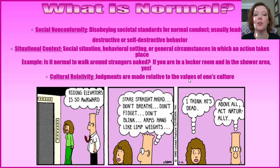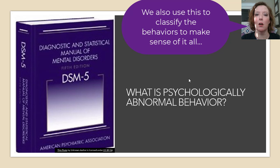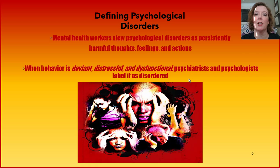And then cultural relativity — judgments are made relative to the values of one's culture. What's appropriate and acceptable in one culture may not be in another, so you have to take that into account. So what is psychologically abnormal behavior? The American Psychological Association publishes what we call the DSM — the Diagnostic and Statistical Manual of Mental Disorders. This is how we deem behavior to be abnormal. Mental health workers view psychological disorders as persistently harmful thoughts, feelings, or actions. When behavior is deviant, distressful, and dysfunctional, psychiatrists and psychologists typically label it as disordered.